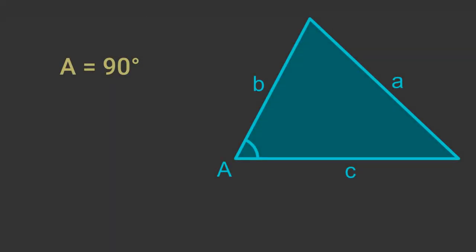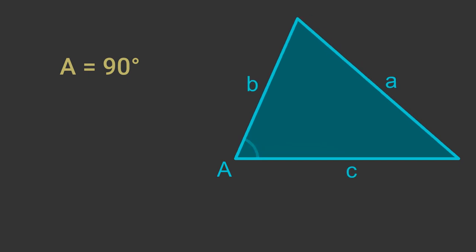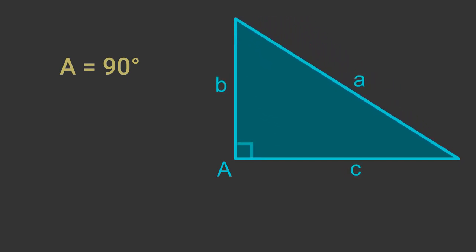It is also interesting to see what happens when angle A is 90 degrees. Here is the cosine rule equation. We know that the cosine of 90 degrees is zero. So when A is 90 degrees, the equation becomes a squared equals b squared plus c squared, which is the Pythagoras equation with our hypotenuse of a. So we can think of the cosine rule as an extension of Pythagoras theorem to cover all triangles, not just right-angled triangles.